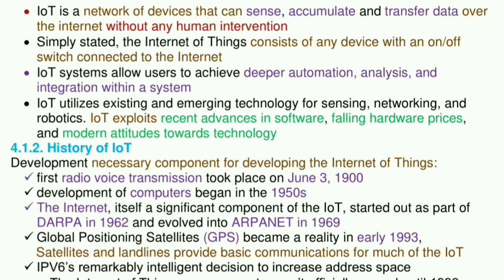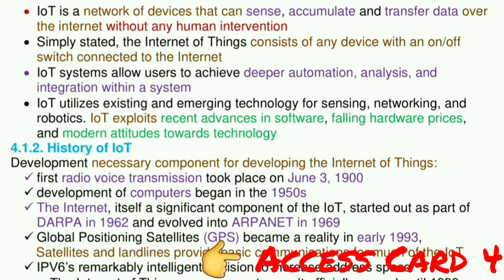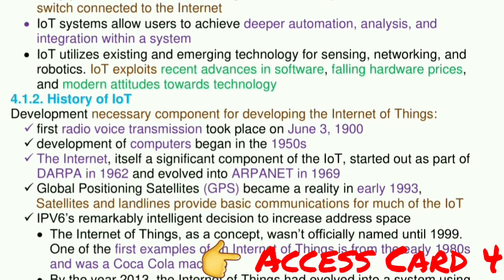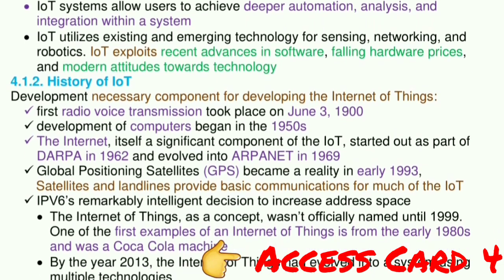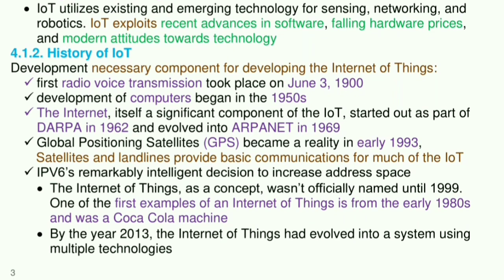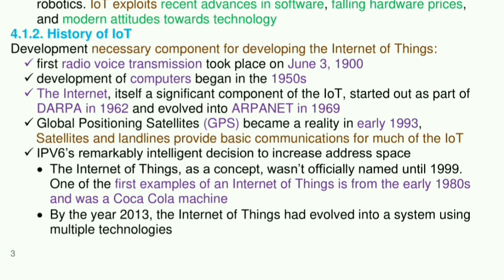Simply stated, the Internet of Things consists of any device with an on-off switch connected to the internet. IoT systems allow users to achieve deeper automation, analysis, and integration within a system. IoT utilizes existing and emerging technology for sensing, networking, and robotics. IoT exploits recent advances in software, falling hardware prices, and modern attitudes towards technology.